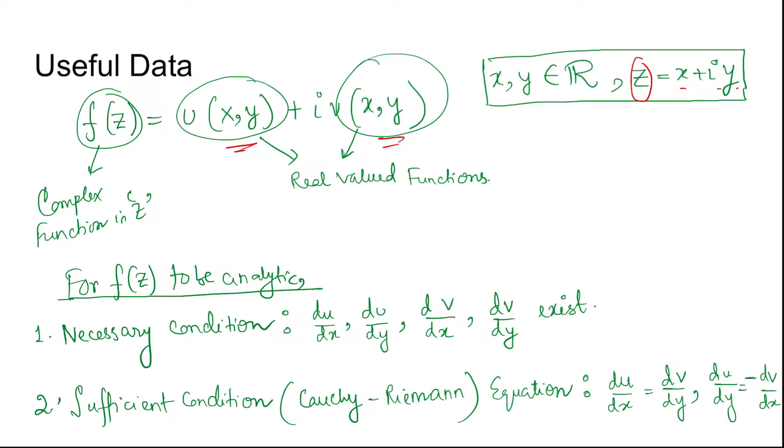Then for f(z) to be analytic, the necessary condition to be satisfied is du/dx, du/dy, dv/dx, and dv/dy should exist. And the sufficient condition for the function to be analytic is du/dx equal to dv/dy, du/dy equal to minus dv/dx. So if this holds, the function f(z) is said to be analytic.